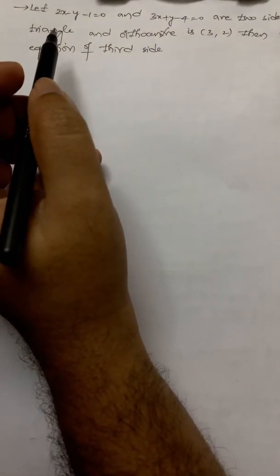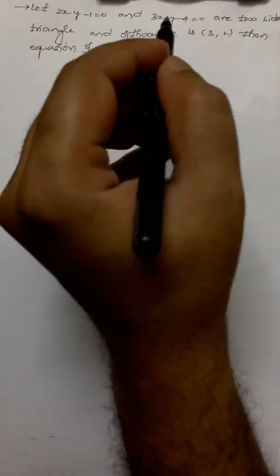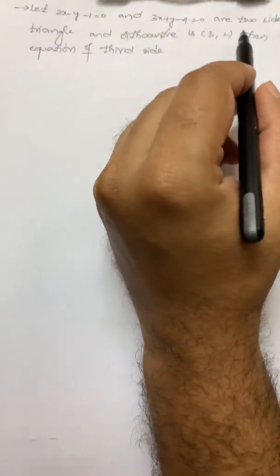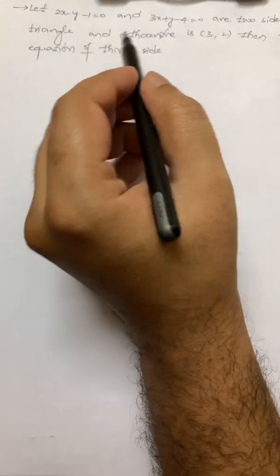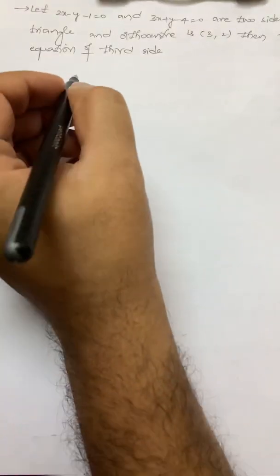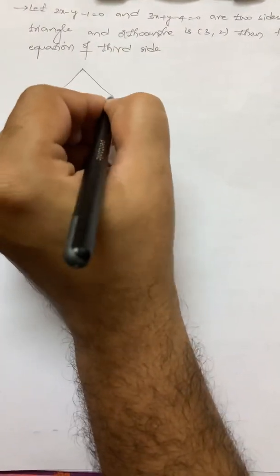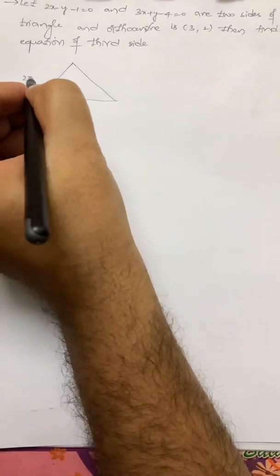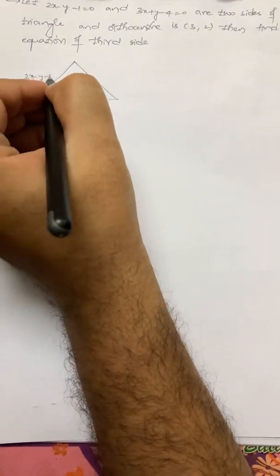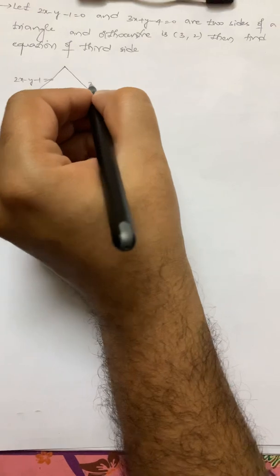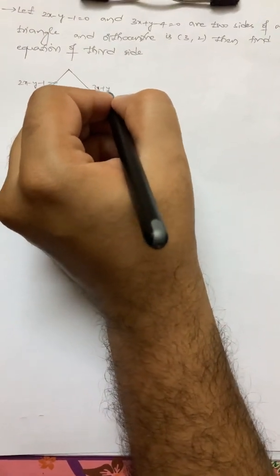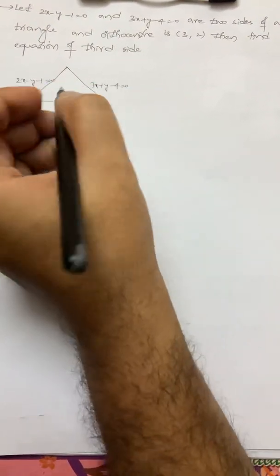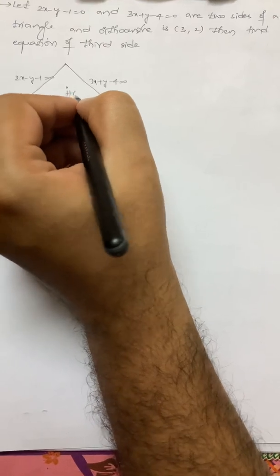Let us look at a problem. Let 2x minus y minus 1 equal to 0 and 3x plus y minus 4 equal to 0 be two sides of a triangle, and the orthocenter is (3, 2). Find the equation of the third side. Let me draw a triangle. Two sides are 2x minus y minus 1 equal to 0 and 3x plus y minus 4 equal to 0, and the orthocenter is (3, 2).